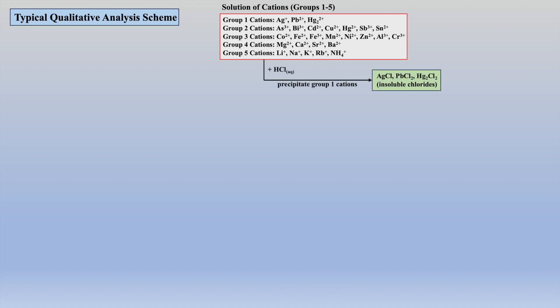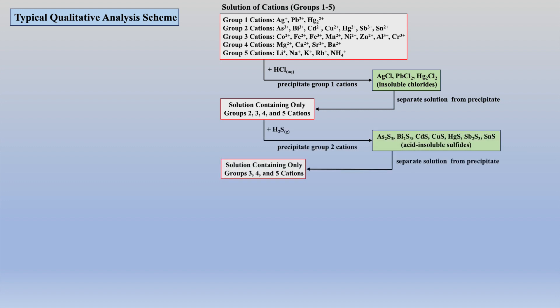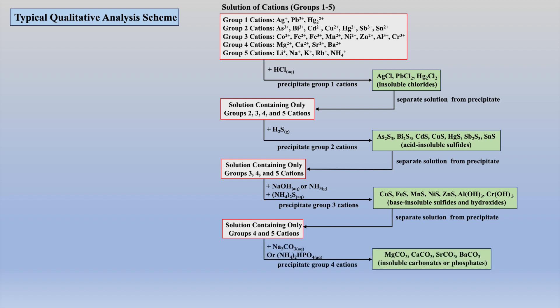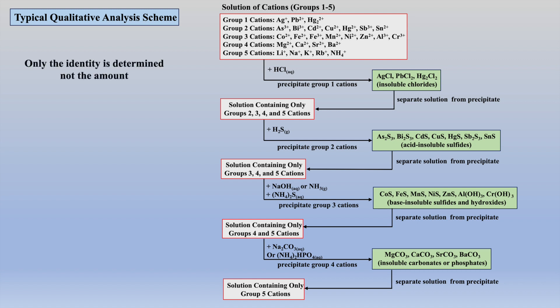The concepts covered within selective precipitation are further demonstrated within the classic qualitative analysis diagram, which begins with over 20 metal ions that can be selectively precipitated with various reagents, separating these metals into 5 major groups. Qualitative analysis demonstrates if a metal cation is in solution but says nothing about the quantity. Once a precipitate is formed within a group, various techniques can be employed to differentiate which precipitate is present, though these will not be discussed here.